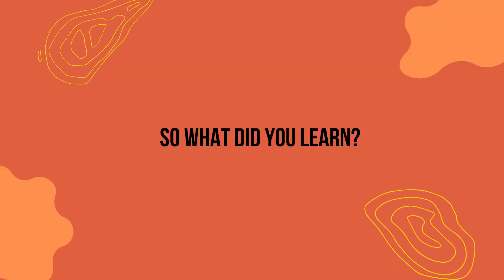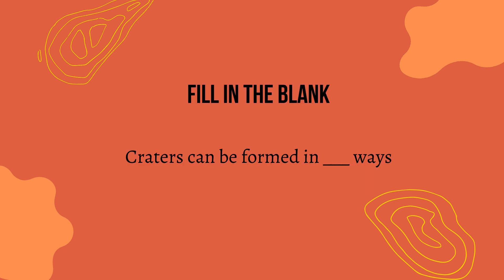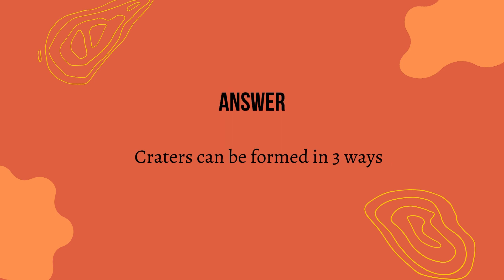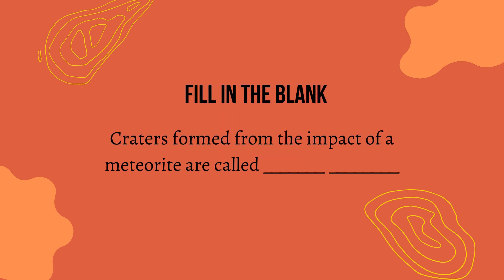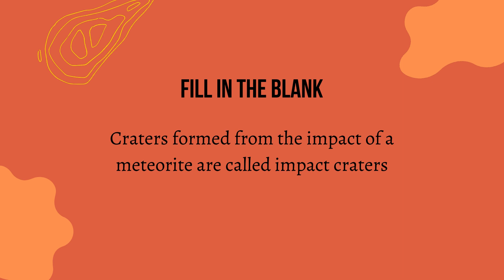So what did you learn? Let's take a quiz. Craters can be formed in how many ways? The answer is craters can be formed in three ways. Craters formed from the impact of a meteorite are called what? The answer is craters formed from the impact of a meteorite are called impact craters.